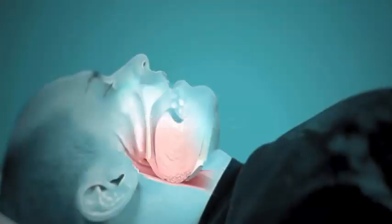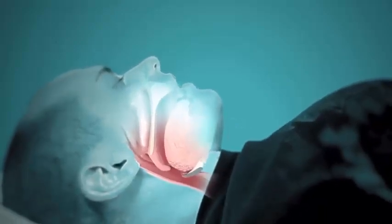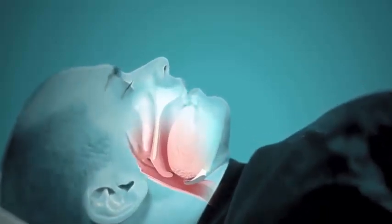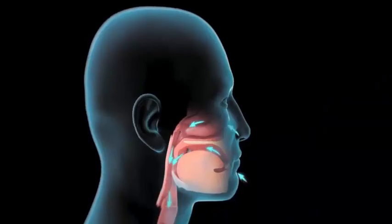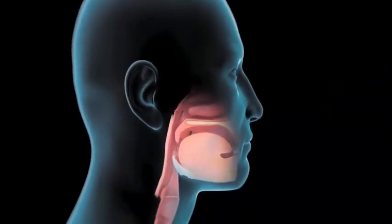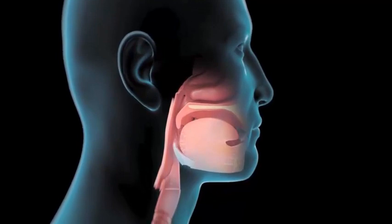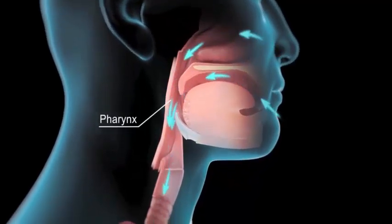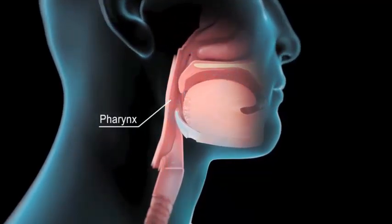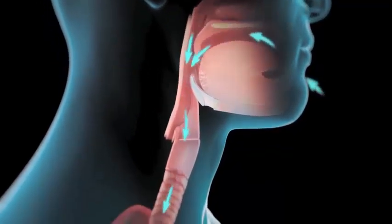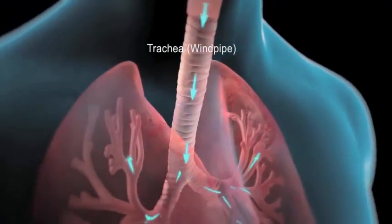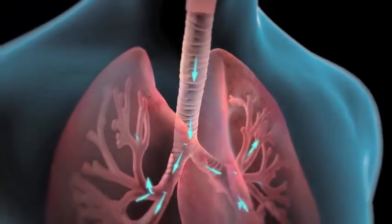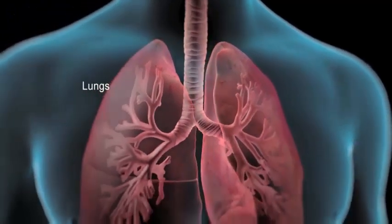If you have obstructive sleep apnea, your breathing pauses for brief periods while you're asleep. Normally, when you breathe in, air flows in through your mouth and nose and down your throat, also called the pharynx. Air then flows down your windpipe or trachea, spreading through a tree-like structure of smaller tubes into your lungs.